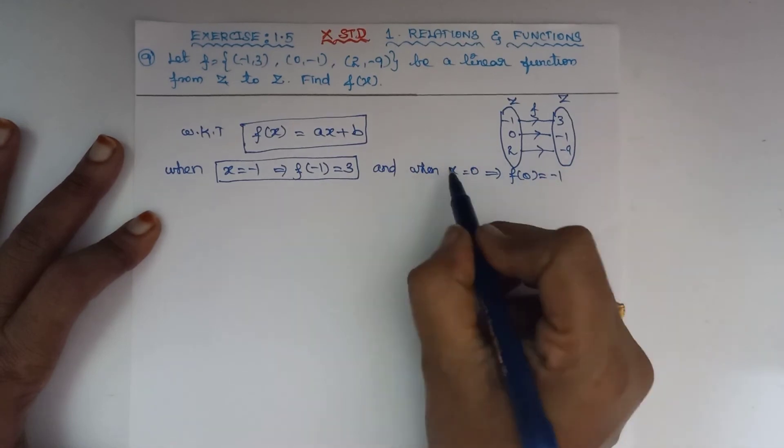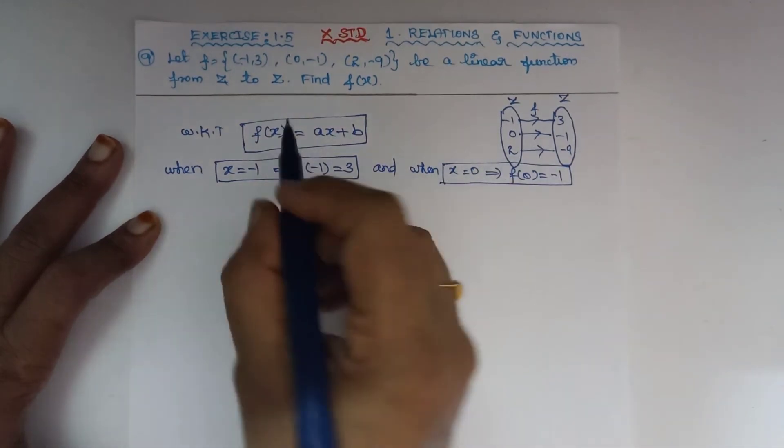And when x = 0, this implies f(0) = -1. So we'll use these values to find a and b.